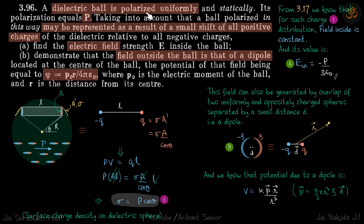A dielectric ball is polarized uniformly, and the polarization is P. So we have this ball here and the uniform polarization means all the molecules are aligned in the same direction and dipole moment per unit volume remains constant.